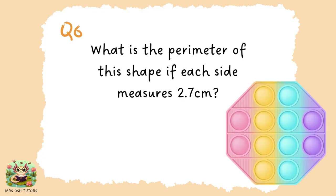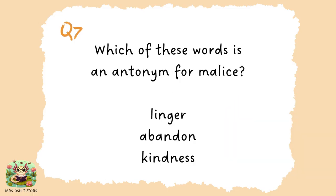Question six. We've got a fidget spinner here. I would like you to work out the perimeter of it if each side measures 2.7 centimetres.